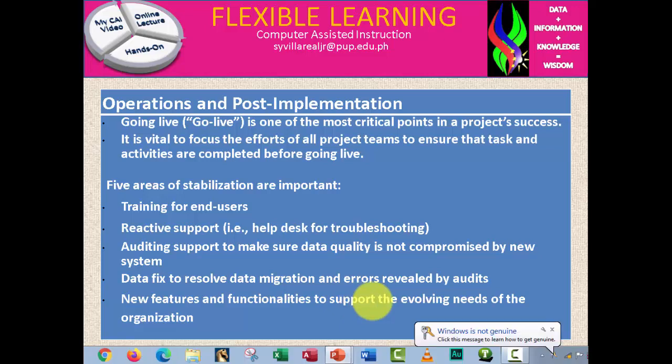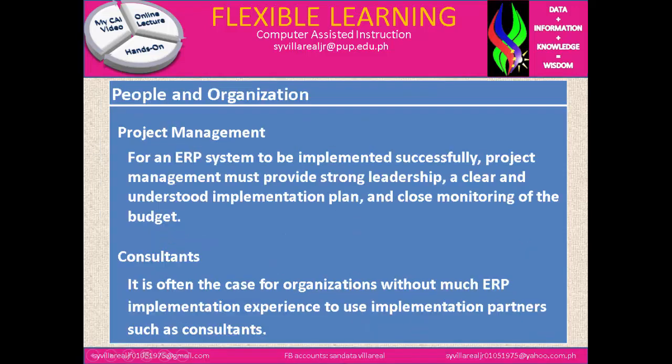There are five important areas of stabilization. First is training for end users. Second is reactive support — for example, a help desk for troubleshooting. Third is auditing support to ensure that data quality is not compromised by the new system. Fourth is data fix, to resolve data migration errors revealed by audits. Fifth is new features and functionalities to support the evolving needs of the organization.